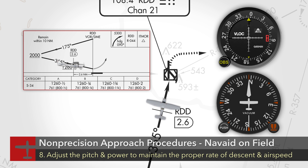Maintain the course by establishing a wind correction heading. For deviations from the course, make small corrections to re-intercept.